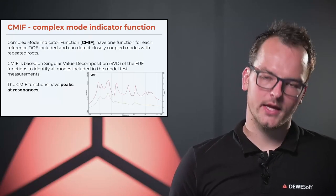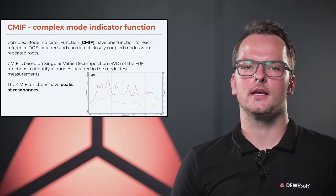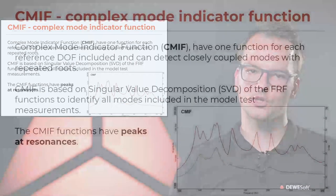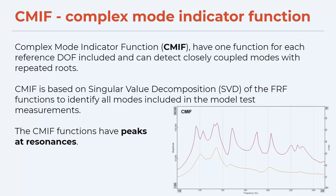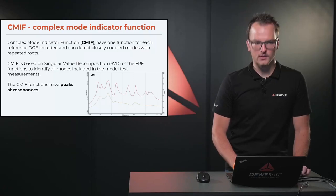In Devasoft, one of the parameters calculated in the modal analysis module is the complex mode indicator function (CMIF). Each degree of freedom has its own complex mode indicator function, and the advantage of this function is that it can detect closely coupled modes with repeated roots. It is based on singular value decomposition and is used to identify all the modes included in the modal test, showing us where in the frequency spectrum the resonances are.